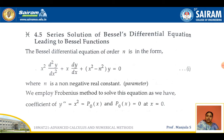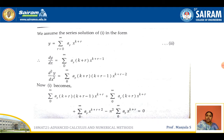Now observe here: the coefficient of the highest order term d²y/dx² is P0(x) = x². If you put x = 0, P0(x) becomes 0. So it means we have to follow the Frobenius method.